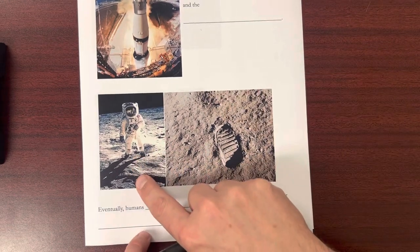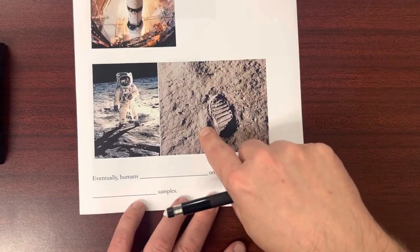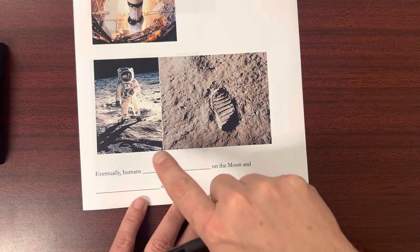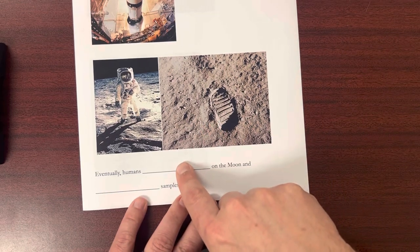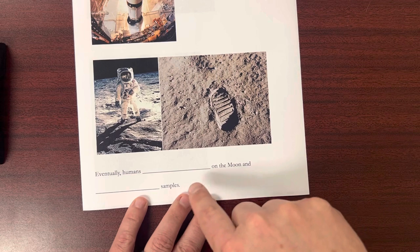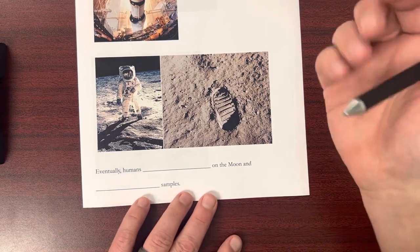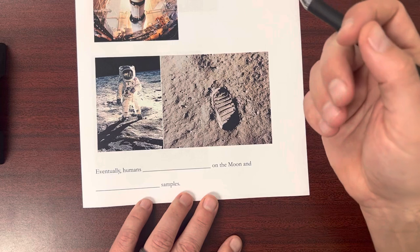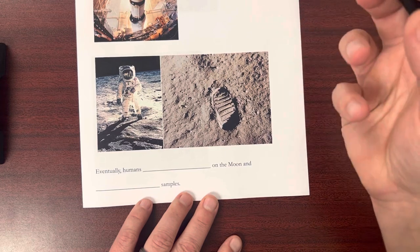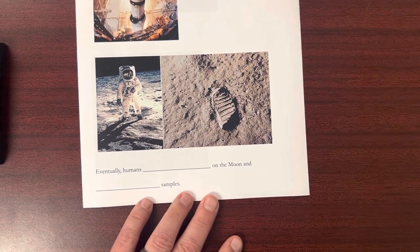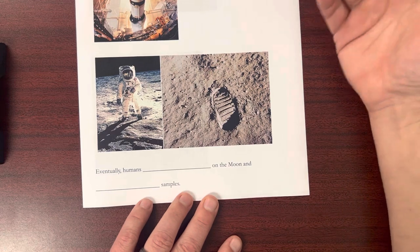And then down here, we actually see some images from when we landed on the moon. So eventually humans set foot on the moon. And we collected samples—samples of rock, samples of dust—whatever we could easily get from the surface to better understand the moon and its origins.